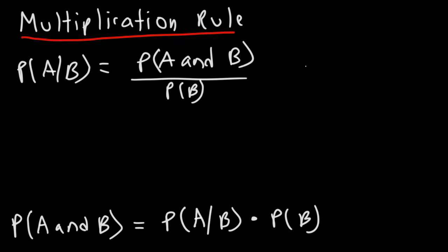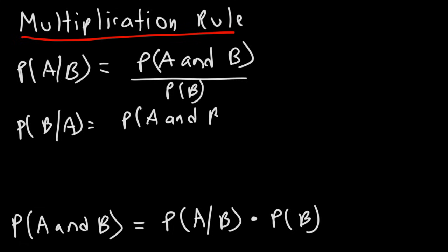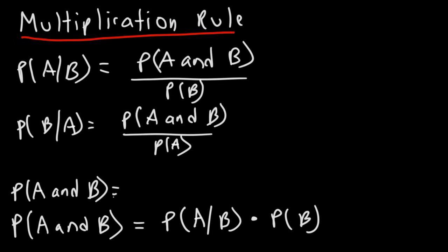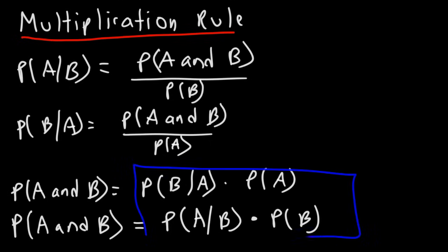What is the probability of B given A? This is still the probability of A and B occurring, but divided by the probability of A. If we rearrange this by multiplying both sides by P(A), we can see that the probability of A and B can also be written as the probability of B given A times the probability of A. Notice the similarities of these two equations.